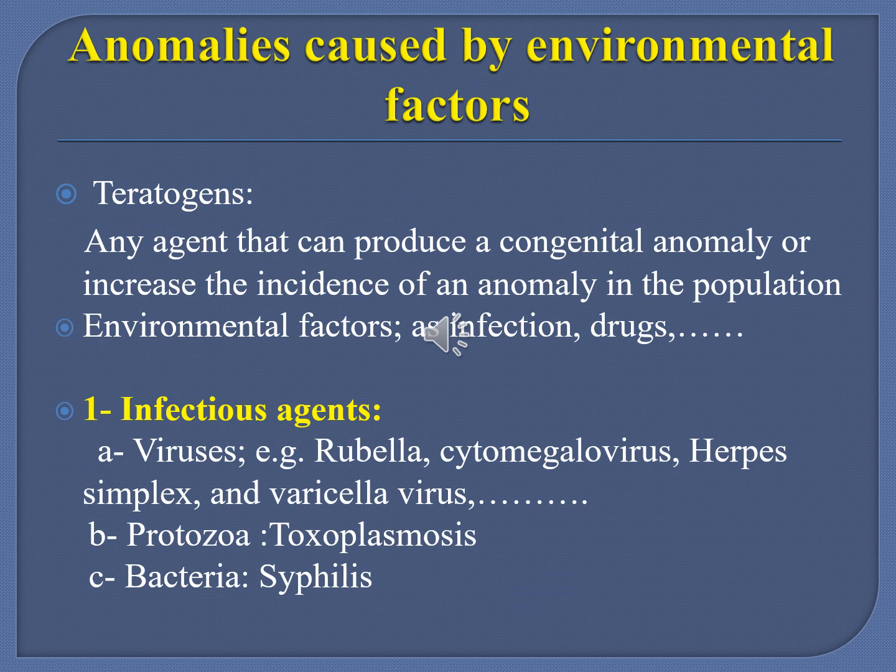Teratogens are any agents that can produce congenital anomalies or increase the incidence of anomalies in the population, including infections, drugs, and chemicals. Infective agents that can be teratogens include viruses such as rubella, cytomegalovirus, herpes, and varicella; protozoa like Toxoplasma gondii causing toxoplasmosis; and bacteria like Treponema pallidum causing syphilis.